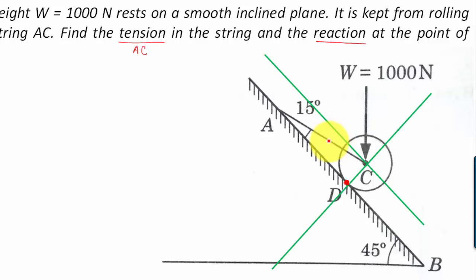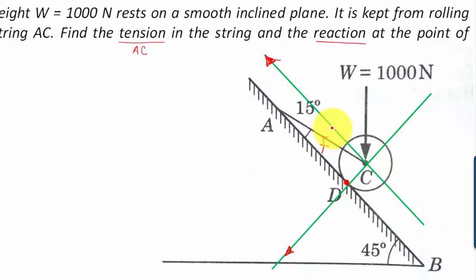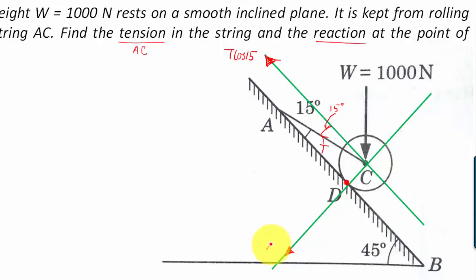The string AC is going to have a force — that is tension T — in this direction. This tension T force will have two components. The angle here is 15 degrees, and hence one component along this direction will be T cos 15, and the other component will be T sin 15.